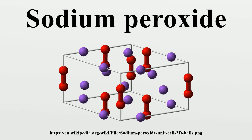Sodium peroxide crystallizes with hexagonal symmetry. Upon heating, the hexagonal form undergoes a transition into a phase of unknown symmetry at 512 degrees Celsius. With further heating above the 675 degrees Celsius melting point, the compound decomposes to Na2O, releasing O2, before reaching a boiling point: 2Na2O2 → 2Na2O + O2.